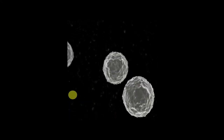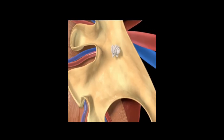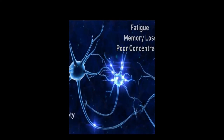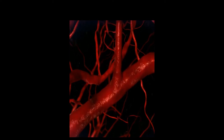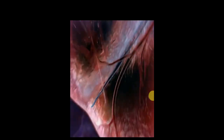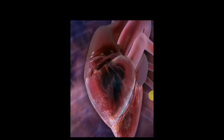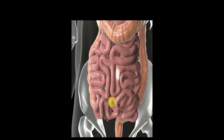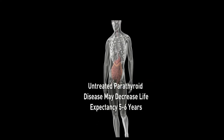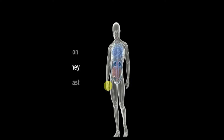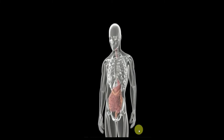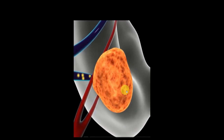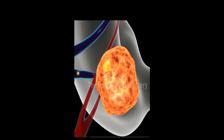High calcium in the kidney leads to kidney stones and impaired kidney function. High calcium levels can cause the nervous system to become sluggish, leading to fatigue, memory loss, poor concentration, anxiety, and depression. High calcium can cause stiffening of blood vessels and high blood pressure, and can cause conduction irregularities in the heart leading to rhythm abnormalities and palpitations. High calcium in the intestines leads to acid reflux and constipation. Overall, high calcium is associated with decreased life expectancy and increased risk of certain cancers, including colon, kidney, breast, and prostate. There is no effective long-term medical therapy; the only cure for hyperparathyroidism is surgery.